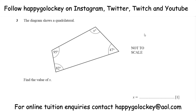OK guys, back with the worked solutions. Yesterday's question showed a pentagon split into three triangles — that's always a good method to work out the sum of angles inside a shape. This is a four-sided shape, so we need to see how many triangles we can break this up into.